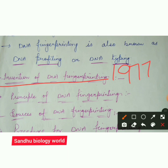This technique was used for the very first time to screen human DNA — to identify the rapist and killer of two girls. This technique was first applied in 1977. This is the principle.